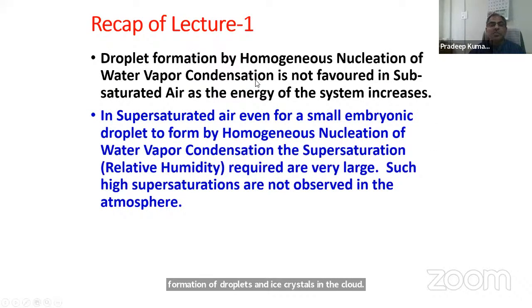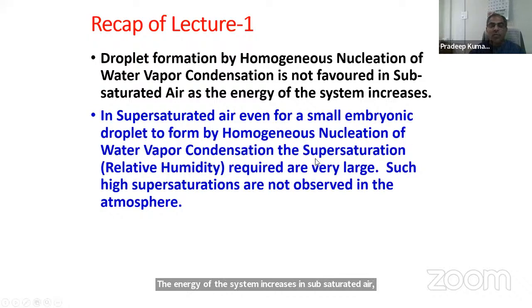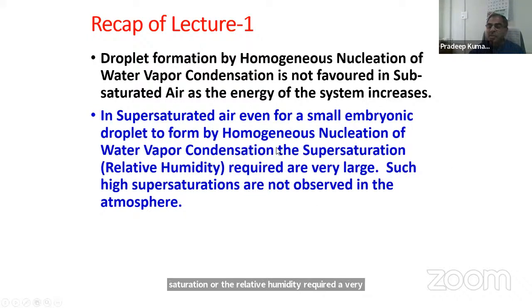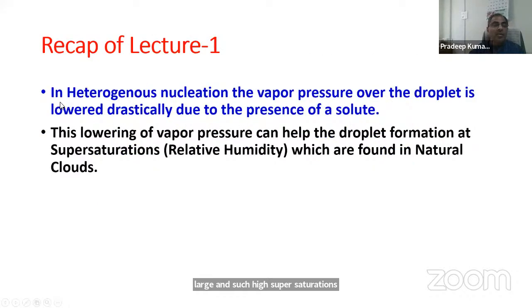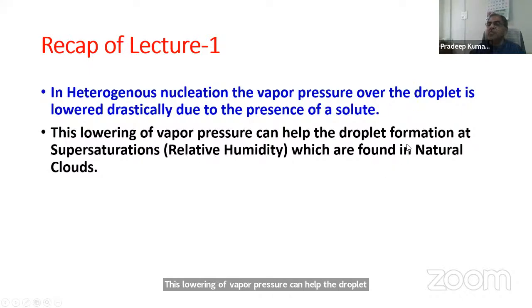Droplet formation by homogeneous nucleation of water vapor condensation is not favored in subsaturated air, as the energy of the system increases. Even for a small embryonic droplet to form by homogeneous nucleation, the supersaturation or relative humidity required is very large, and such high supersaturations are not observed in the atmosphere. In heterogeneous nucleation, the vapor pressure over the droplet is lowered drastically due to the presence of the solute, and this lowering of vapor pressure can help droplet formation at supersaturations found in natural clouds.